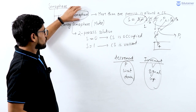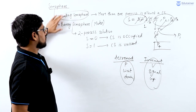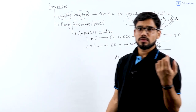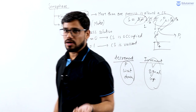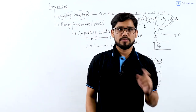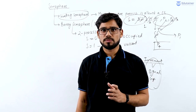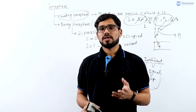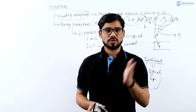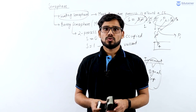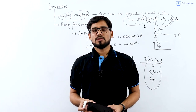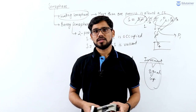So counting semaphore and binary semaphore are the two semaphore solutions that basically resolve the problem of deadlock arising in the producer-consumer problem. That's all about the synchronization mechanism concept. In the GATE syllabus, we have the semaphore concept without busy-waiting solution. After this synchronization mechanism concept, we will discuss the deadlock concept in the next video.